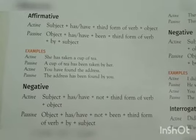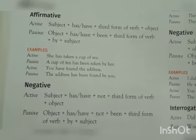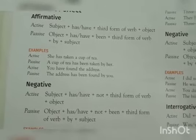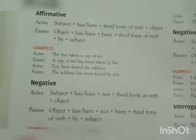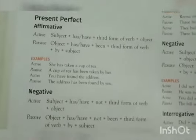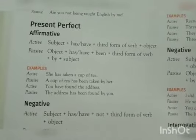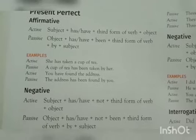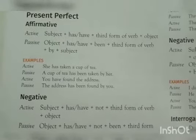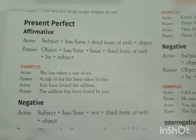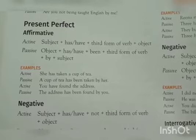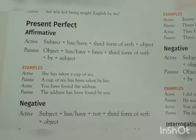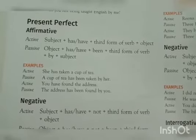'You have found the address' becomes 'The address has been found by you.' I am showing these examples very clearly so that you can understand the rules being discussed — how they are being presented in each sentence. Please follow along and try to figure out which one is the subject, which is the object, and how the third form of verb is being used.